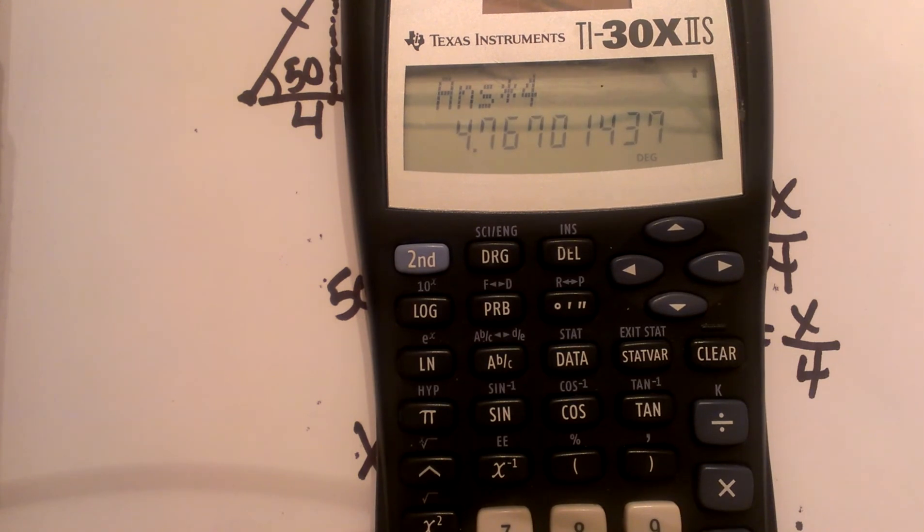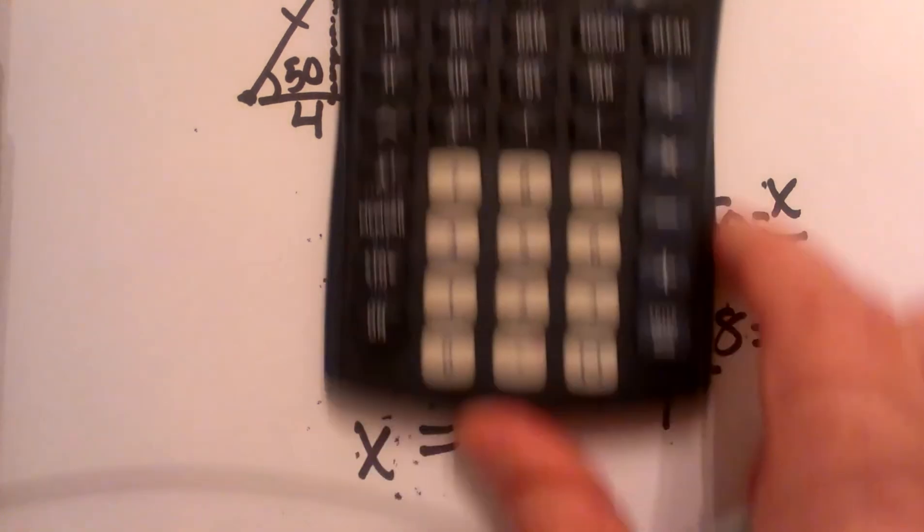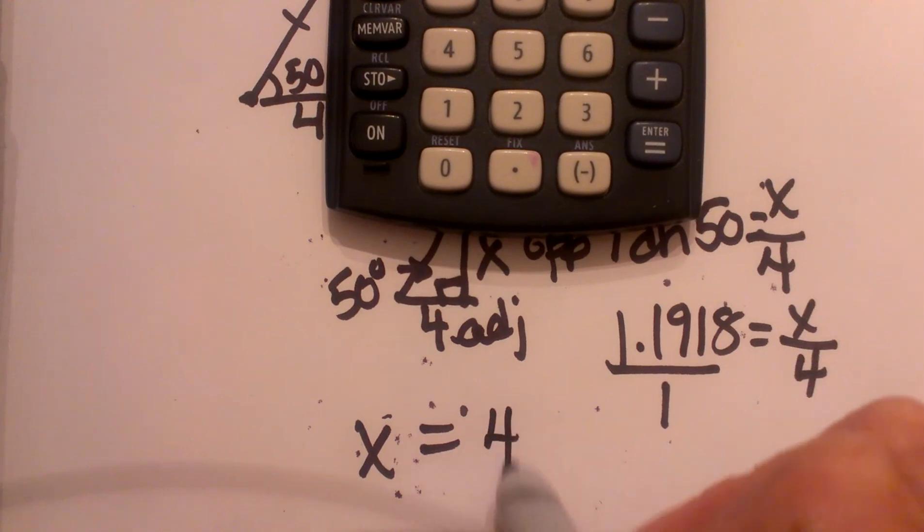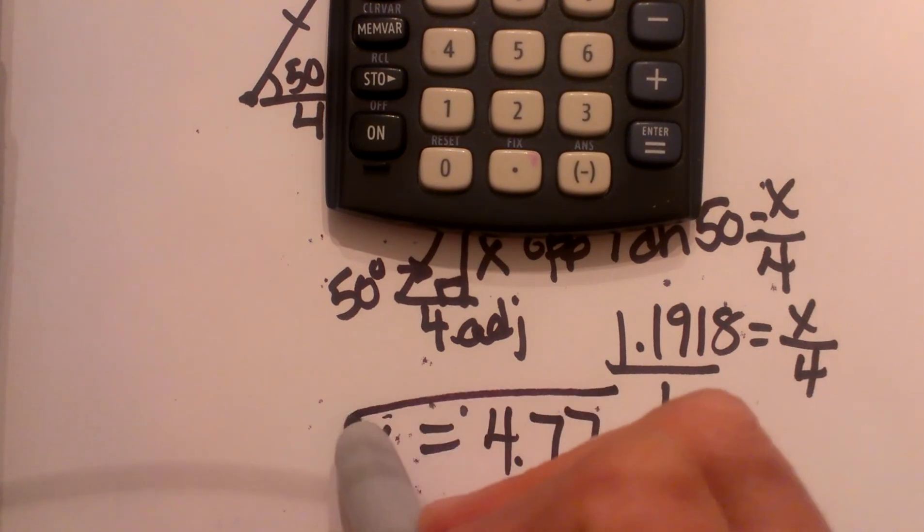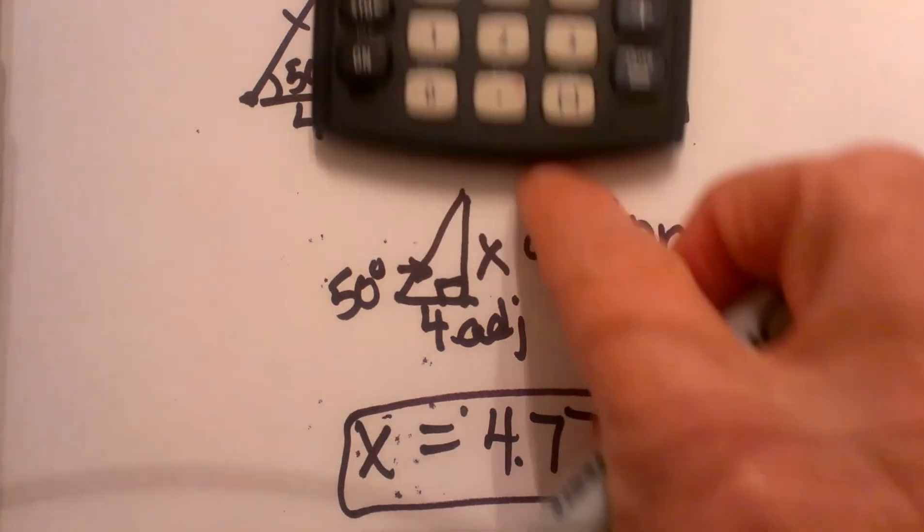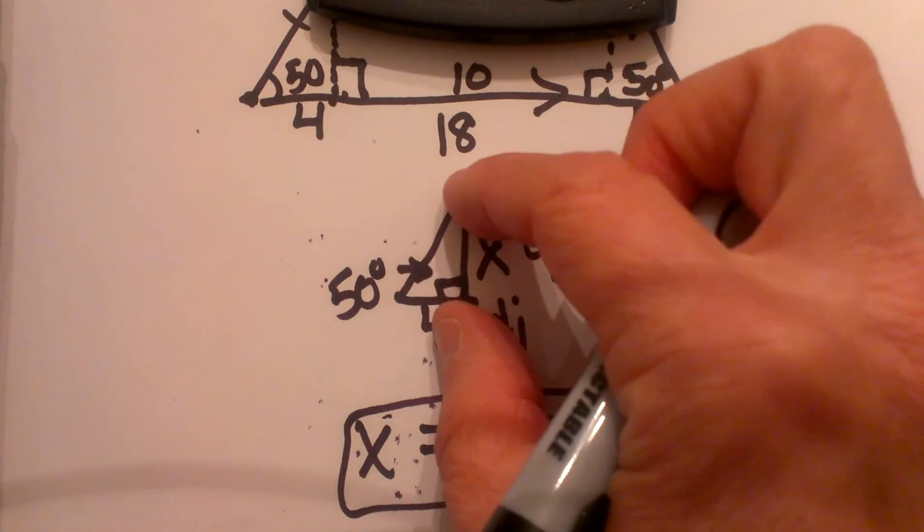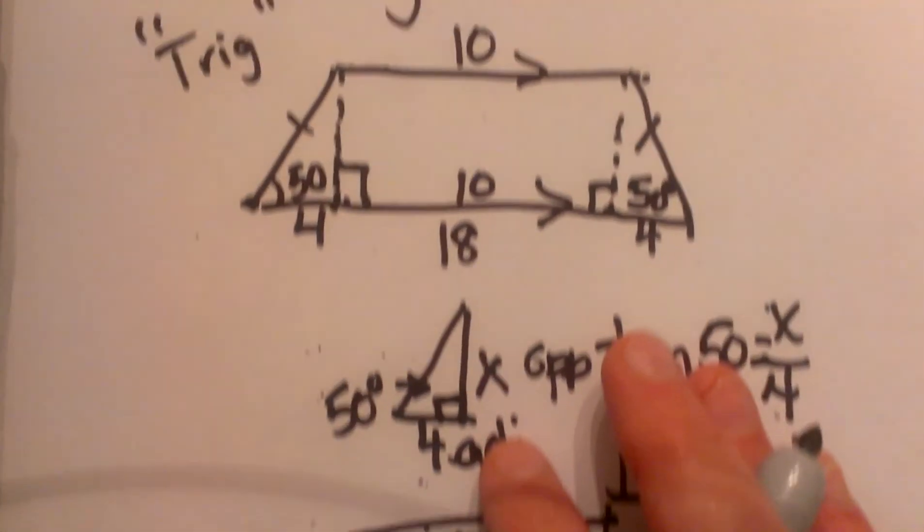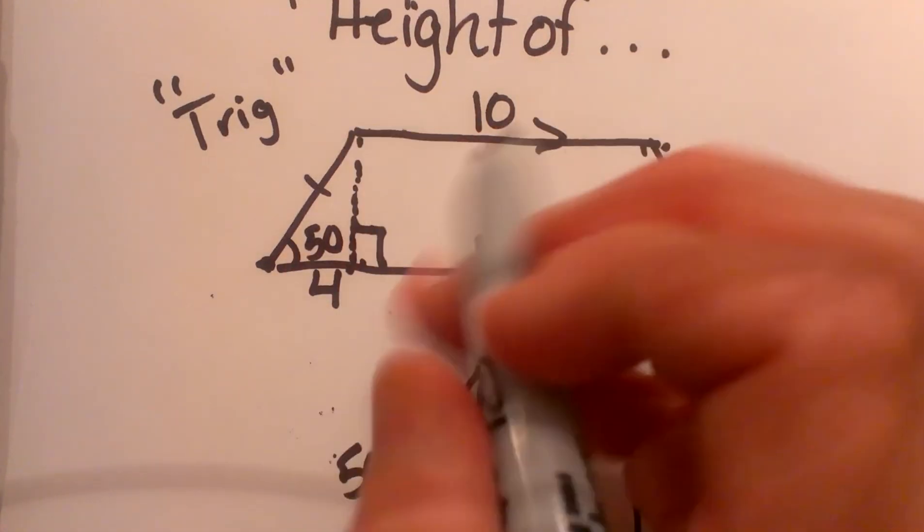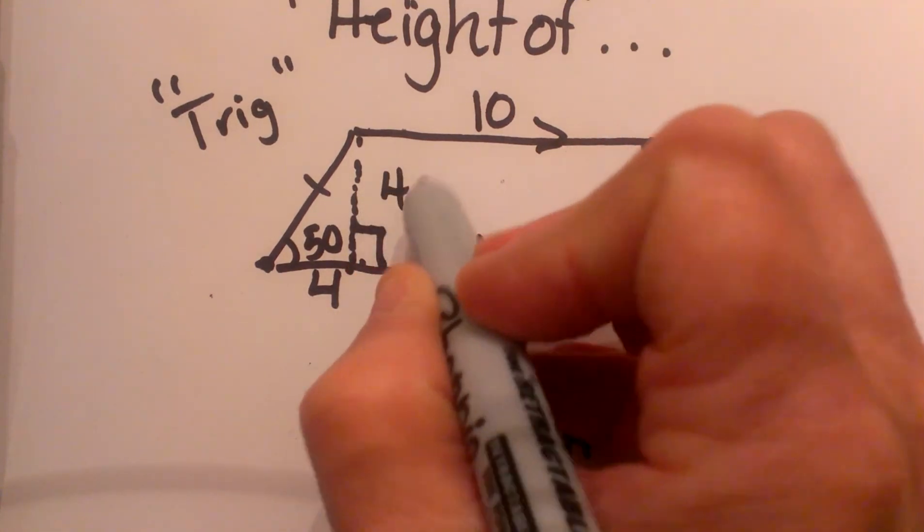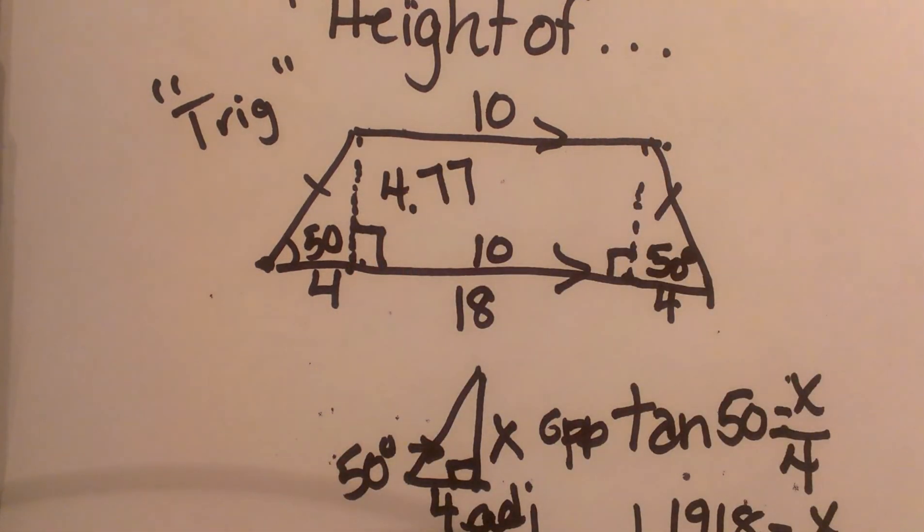And that represents the height of this triangle which is also the height of the trapezoid, so the answer is 4.77. Hope this video was helpful.